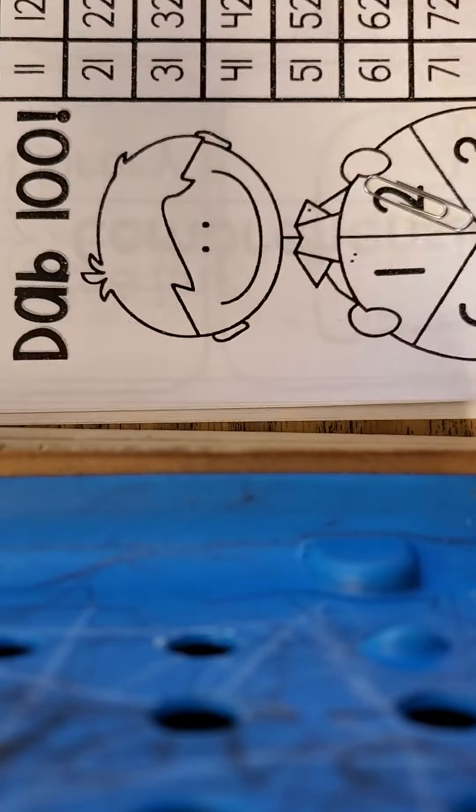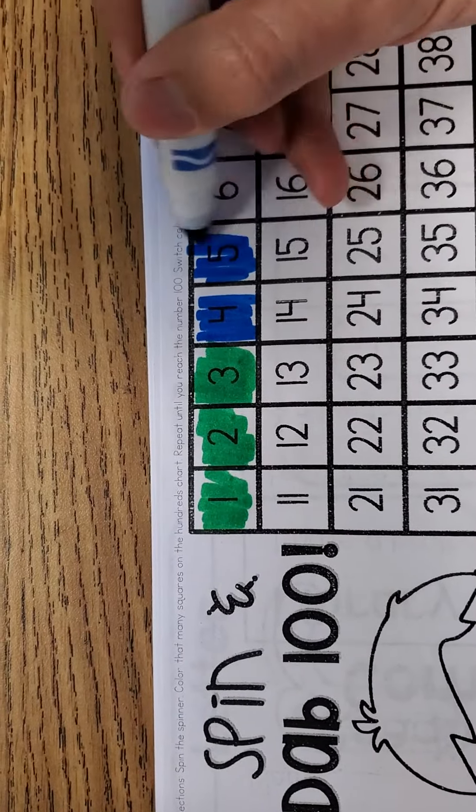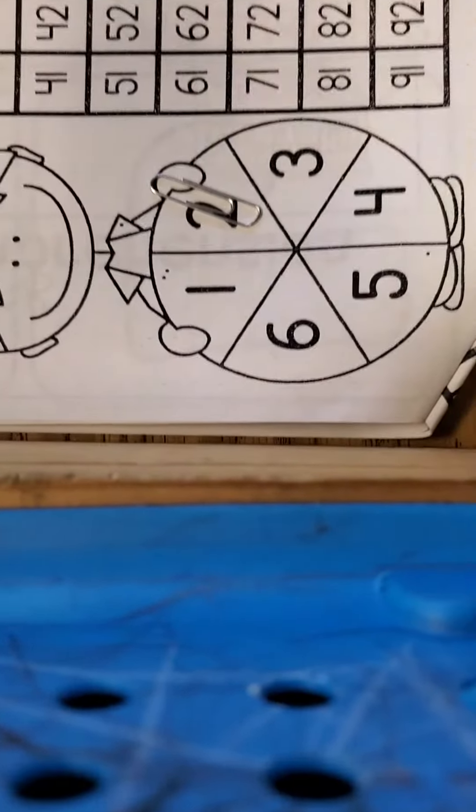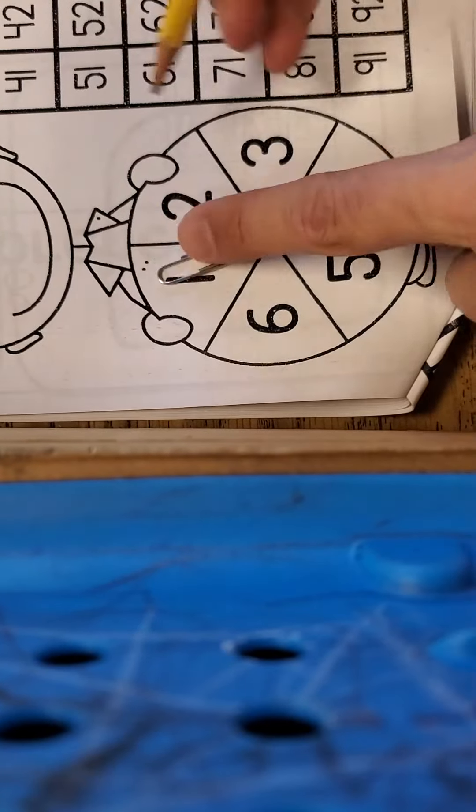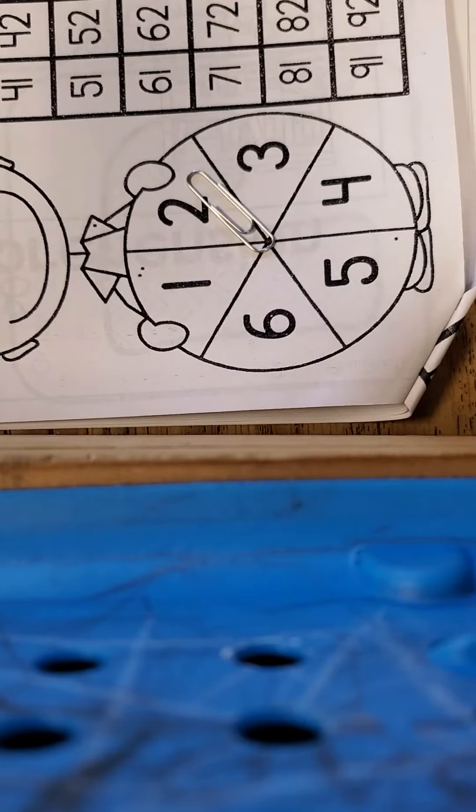...going to color two more numbers: one, two. Alright, I'm going to keep doing that until I get all the way to 100. So take your paper clip, spin—two! I got two again. I'm going to...